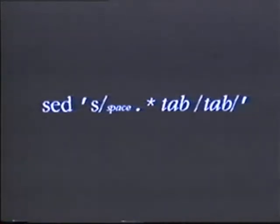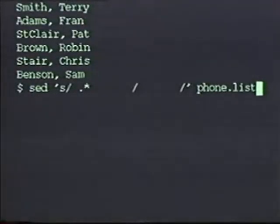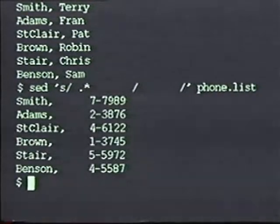This command will get rid of first names by removing everything from a space to the following tab. However, we have to be careful: if we remove the space, the first name, and the tab, then the phone number and last name will be right next to one another, because we haven't put anything back in to separate them. It's best to take out the space, the first name, and the tab, and then put a tab back in — which is what this command does.